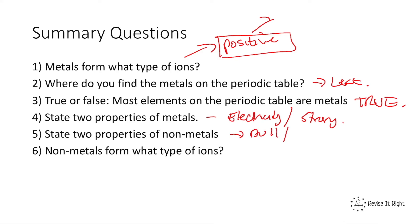State two properties of non-metals. They're dull, don't generally conduct heat or electricity, have low boiling or melting points, and are lower in density. Non-metals form what type of ions? They form negative ions or bond covalently. We've now covered metals and non-metals. For more practice, visit the website, and if you need help, contact a tutor.